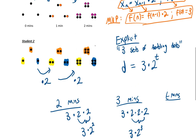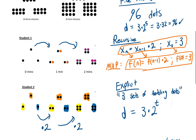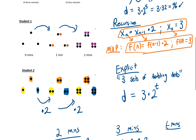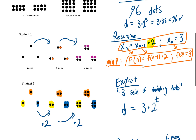Let's verify using the formula: at five minutes that's 3 × 2⁵. Two to the fifth power is 2×2=4, ×2=8, ×2=16, ×2=32. So 3 × 32 = 96 — which matches what we already knew. To summarize: in a geometric sequence, the recursive formula uses multiplication instead of addition, and in the explicit formula we have 2 to the T power instead of 2 times T, because repeated multiplication is represented by exponents.